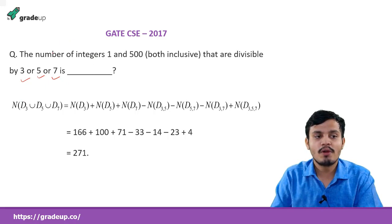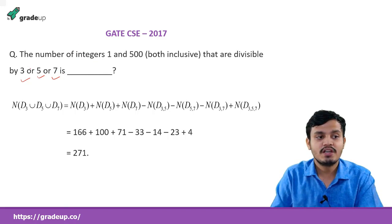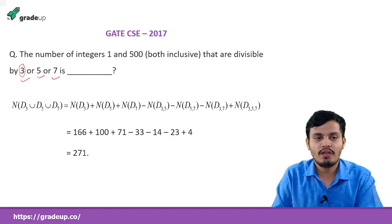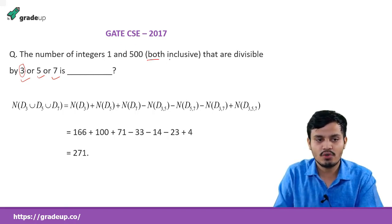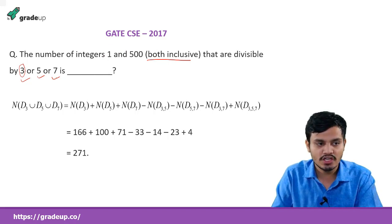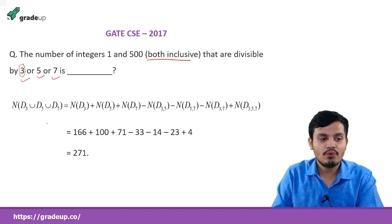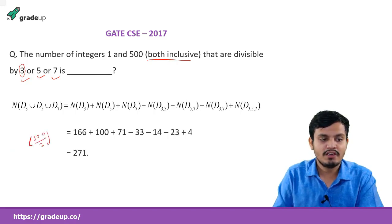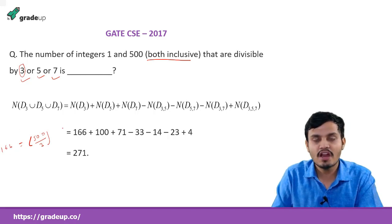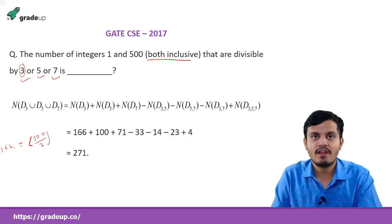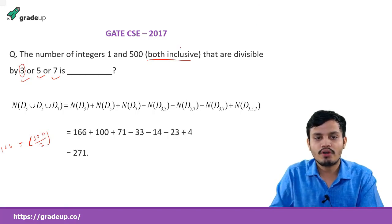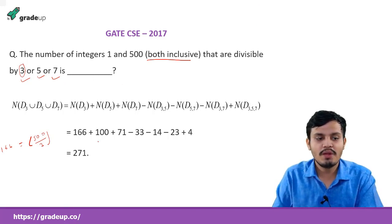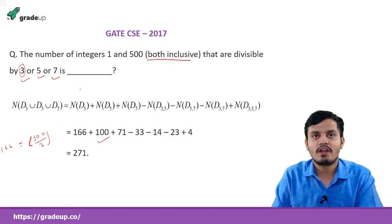This is a problem from the Principle of Inclusion and Exclusion. First, find the number of integers divisible by 3 between 1 to 500, both inclusive. How will you find it? 500 divided by 3 gives 166. So 166 numbers are divisible by 3. Now find all numbers divisible by 5 — that will be 100. Divisible by 7 — that will be 71.